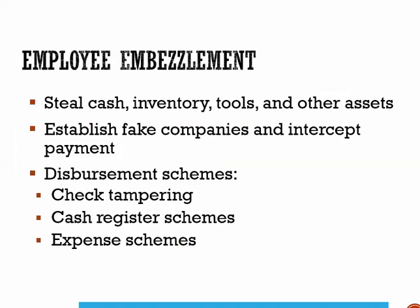Another common form is employee embezzlement — the primary form of fraud committed against a business or organization. Employee embezzlement usually involves a misappropriation of business assets by an employee. Employees can steal cash, inventory, tools, supplies, or other assets from the employer, establish fake companies and have the employer pay those phony companies for goods or services that are never delivered, and then intercept and fraudulently cash the checks.